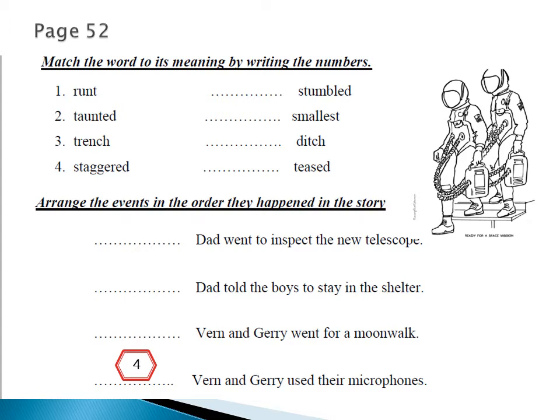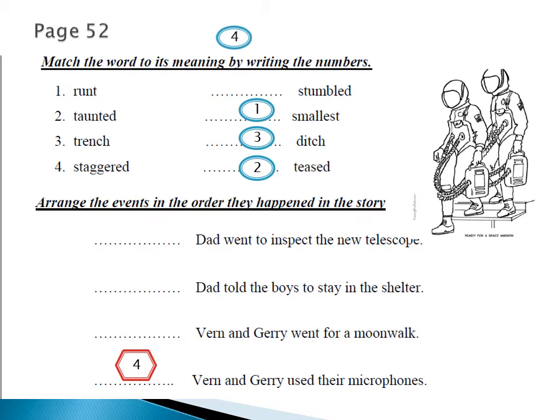So the first question is on page 52: match the word with the meaning. The first word is 'runt' — which word could possibly mean runt? Yes, nice — 'smallest.' Please write in your booklet. 'Taunted' — which word could mean taunted? Is it stumbled, ditch, or teased? The word is 'teased.' And 'trench' also means 'ditch,' and 'staggered' means 'stumbled.'